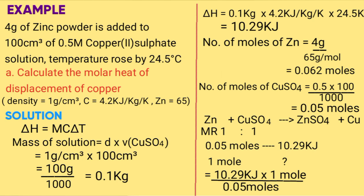Cross multiply: 10.29 kilojoules times 1 mole divided by 0.05 moles gives you negative 205.8 kilojoules per mole. The negative value is because temperature rose, giving an exothermic reaction.